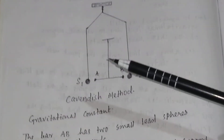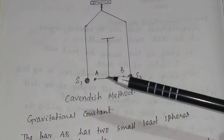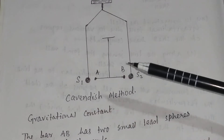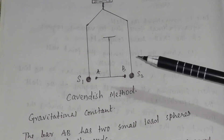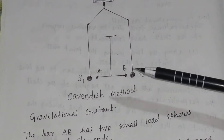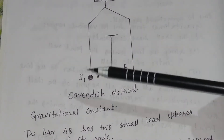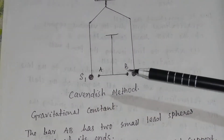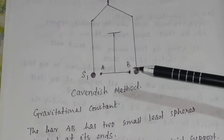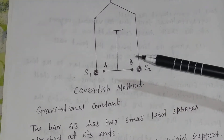The large spheres S1 and S2 are placed on either side of masses A and B. There is an arrangement for the rotation of spheres S1 and S2 — they can rotate, meaning S1 and S2 can move to either side.